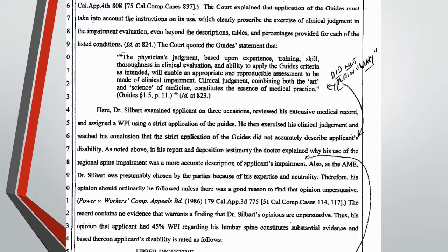The AMA guides state that the physician's judgment, based on experience, training, skill, thoroughness in clinical evaluation, and ability to apply the guide's criteria as intended, will enable an appropriate and reproducible assessment of clinical impairment. Clinical judgment, combining both the art and science of medicine, constitutes the essence of medical practice. The court noted that the agreed medical evaluator examined the applicant on three occasions, reviewed his extensive medical record, and assigned a whole person impairment rating using a strict application of the guides — the 27% whole person impairment — thus complying with step one of the four-part formula.